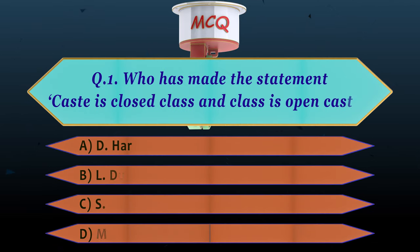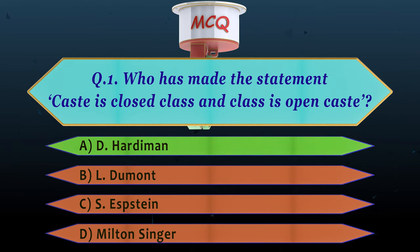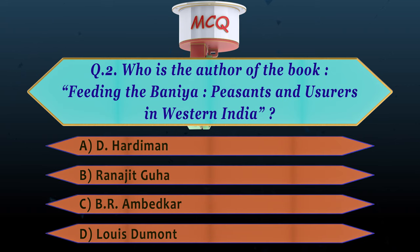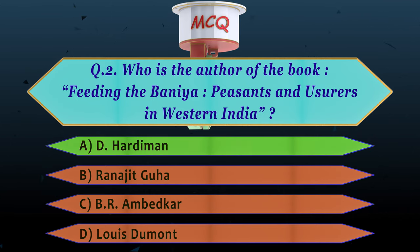Let us discuss some questions. Who made the statement 'caste is closed class and class is open caste'? This is said by David Hardiman — please understand this, as it is very important for examinations. Question number two: who is the author of the book 'Feeding the Baniya: Peasants and Usurers in Western India'? This is given by David Hardiman. In this book, he talks about the relationship between peasants and Baniyas, and how Baniyas have always gotten economic support from influential people and also from the state, which is why they managed to continue their monopoly.